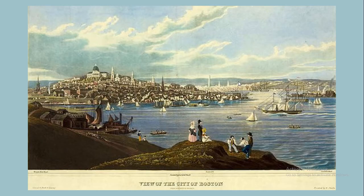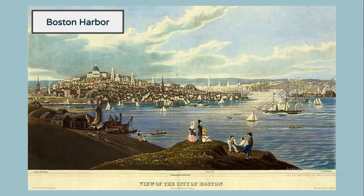Here we have an image of Boston during colonial times. You can tell by the way that people are dressed and by the style of ships that are moving in and out of the harbor. This is Boston Harbor — a harbor is a place like a parking lot for boats where they can come in and out, trade their goods, make money, and then move on to their next port.